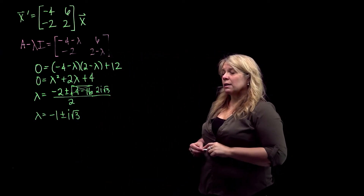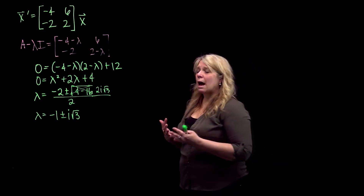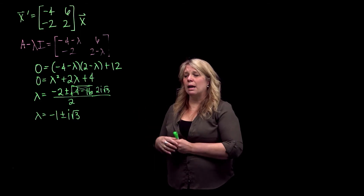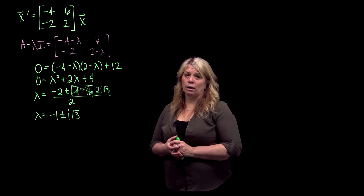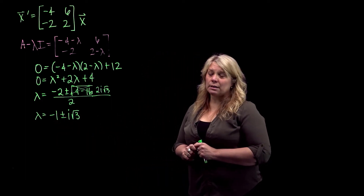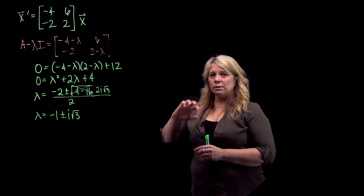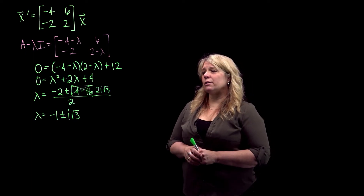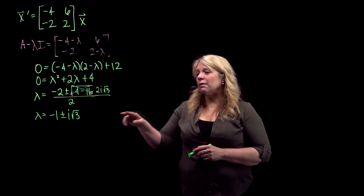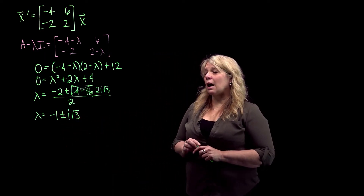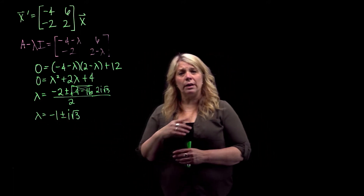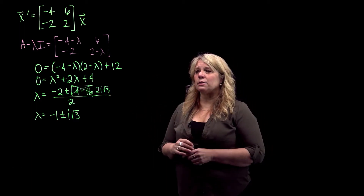So those are non-real eigenvalues. From here, I need to think about how to proceed. Look back at our notes — we have things written about how to handle this. Essentially, just like when we did non-real zeros for the characteristic polynomial, you'll end up with exponential functions involving e to the negative t, and trig functions involving cosine of √3·t and sine of √3·t. The eigenvectors for the two conjugate eigenvalues will actually be conjugates of each other, so you only have to find one.